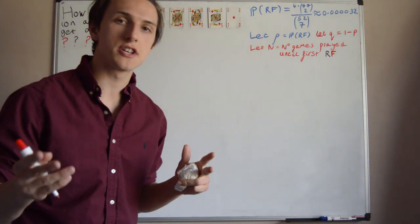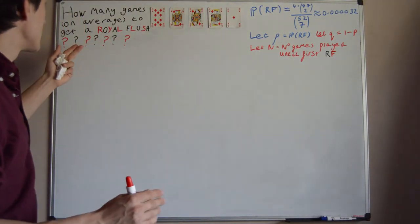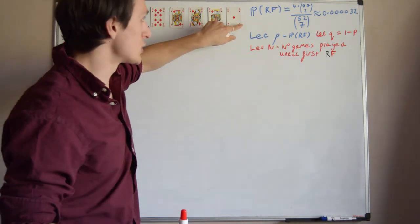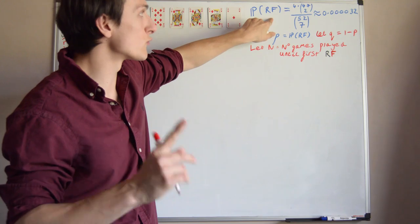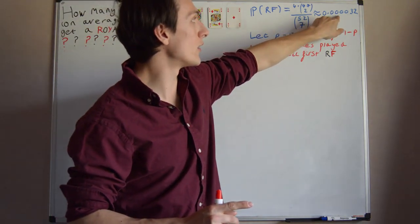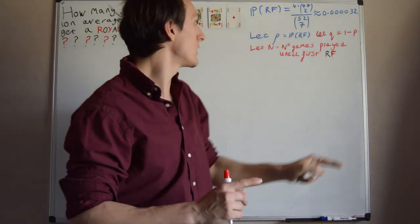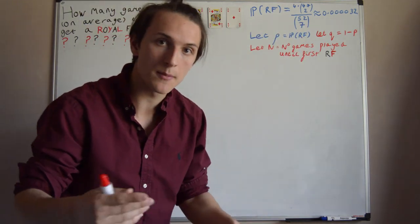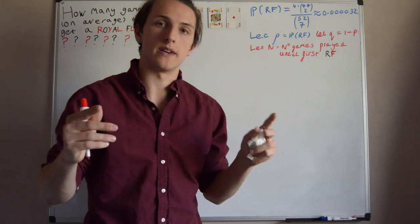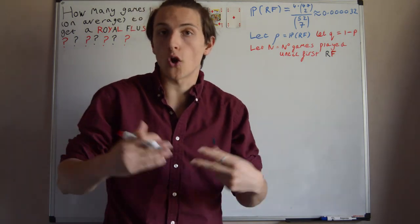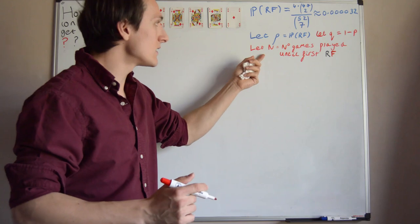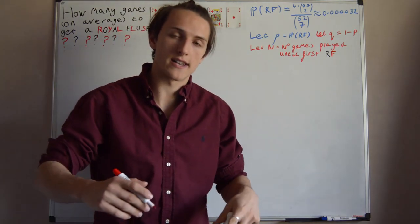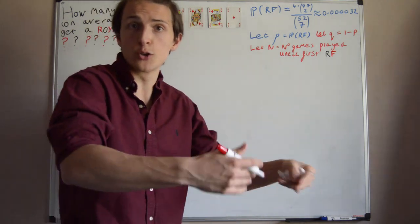What answer should Jimmy have given his dad? How many games would you play on average to get a Royal Flush? So before we get into that, just recall that the probability of getting one Royal Flush is approximately 0.00032, and let p be this probability, just so I don't have to write that down every single time, and let q equal 1-p, which is just the probability of not getting a Royal Flush. And finally, let n, this random variable, be the number of games played before your first Royal Flush, and including that last game.